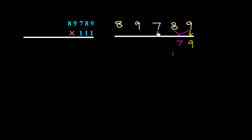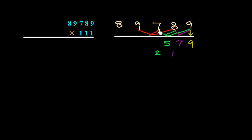Then we add 3 numbers: 7 plus 8 plus 9 is 24, plus 1 carry is 25 — write 5, carry 2. Next three: 9 plus 7 plus 8 is 24, plus 2 carry is 26 — write 6, carry 2.